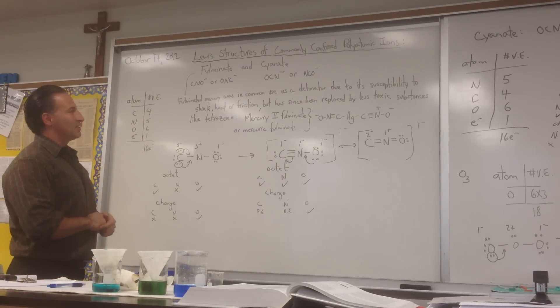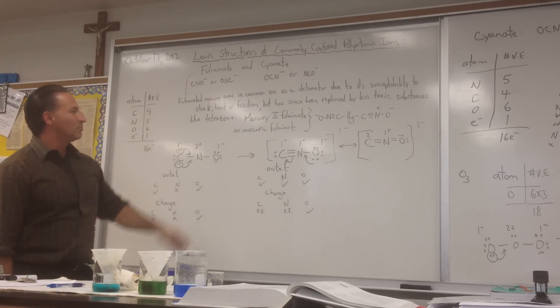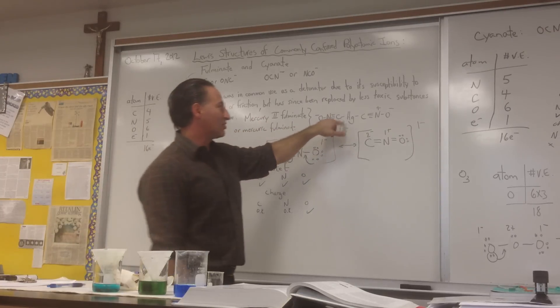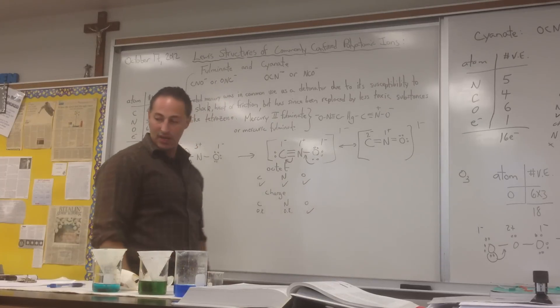Fulminated mercury was in common use as a detonator due to its susceptibility to shock, heat, or friction and has since been replaced by less toxic substances like tetrazine. Mercury(II) fulminate, also known as mercuric fulminate, would have this structure with mercury atom in the middle and the two fulminate molecules on either side.